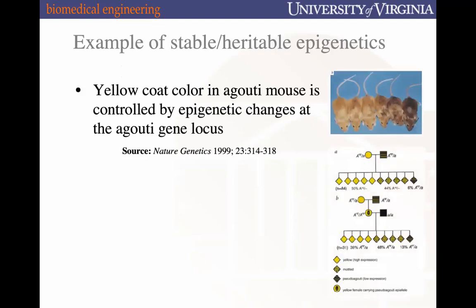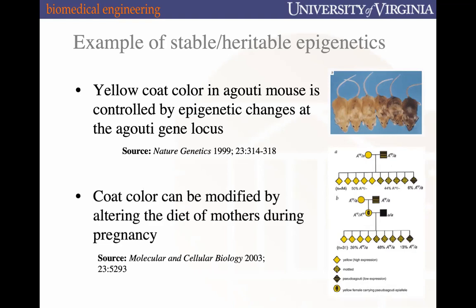An example of stable, heritable epigenetics was first demonstrated using the agouti mouse. The agouti gene locus defines fur pigmentation in these mice. As the mother's diet changed over time, the agouti gene locus was altered, changing the fur coat color in subsequent litters from the same breeding pair. The coat color was modified simply by changing the mother's diet — an environmental factor causing inherited changes at a gene locus.